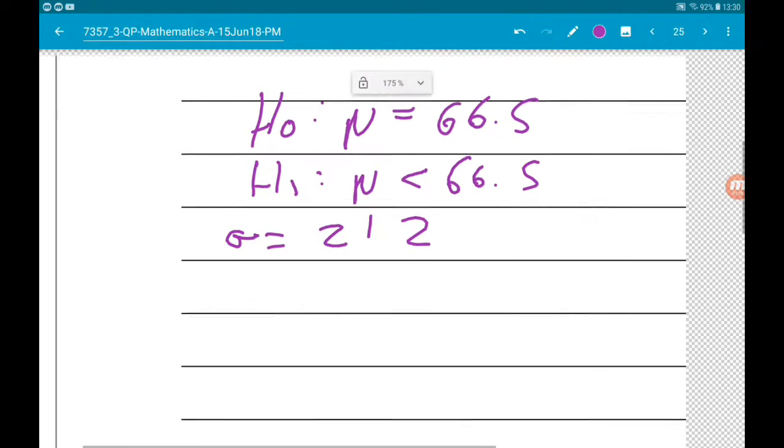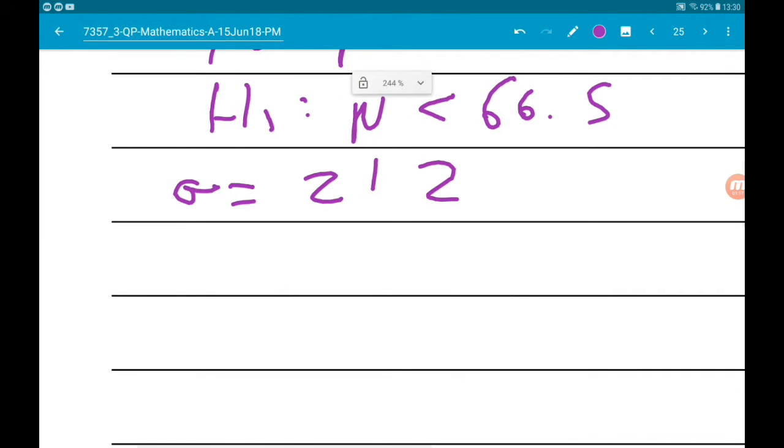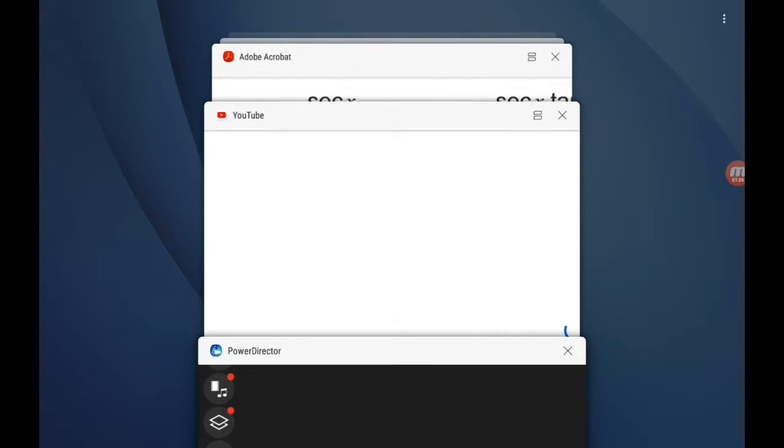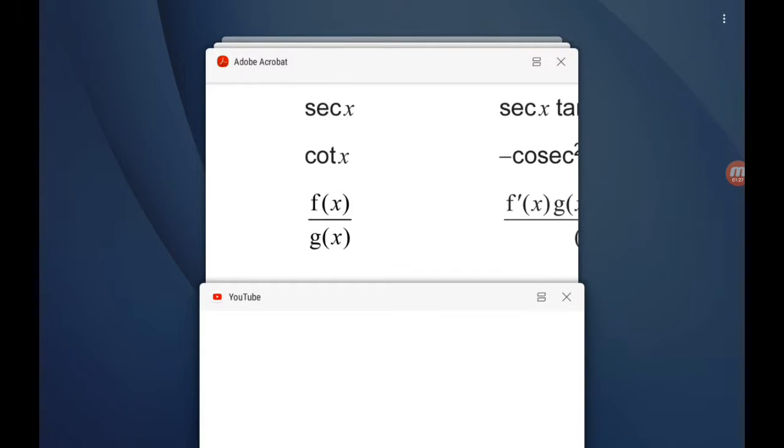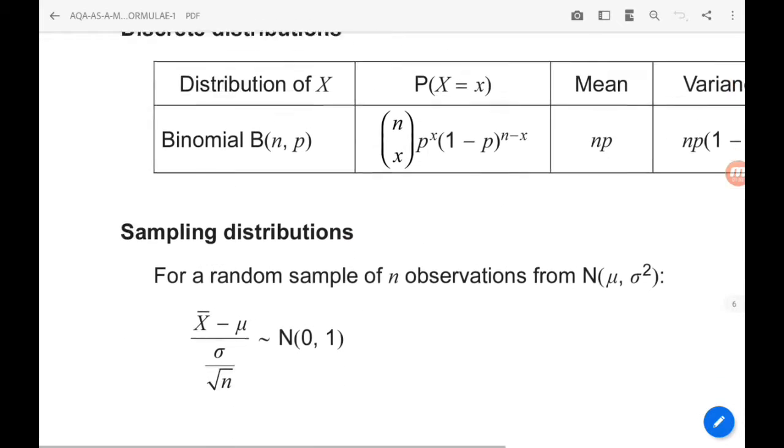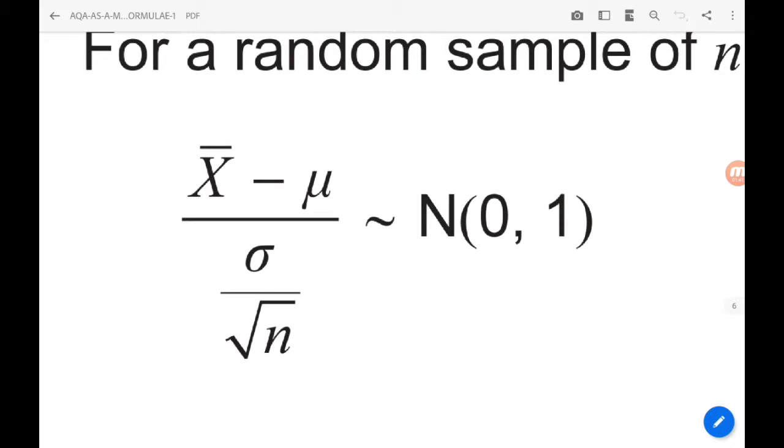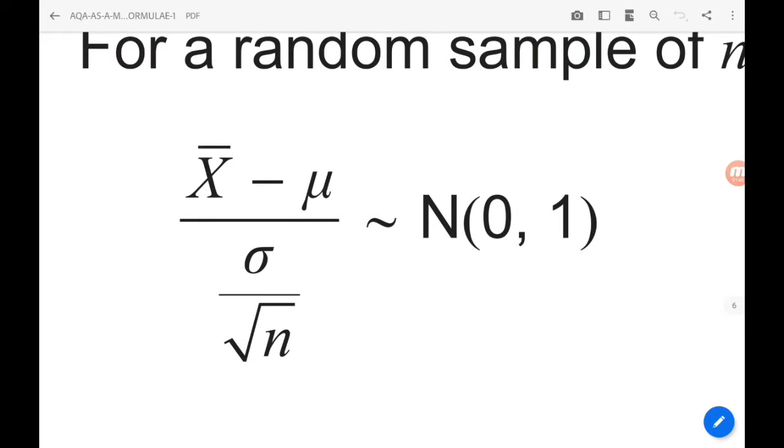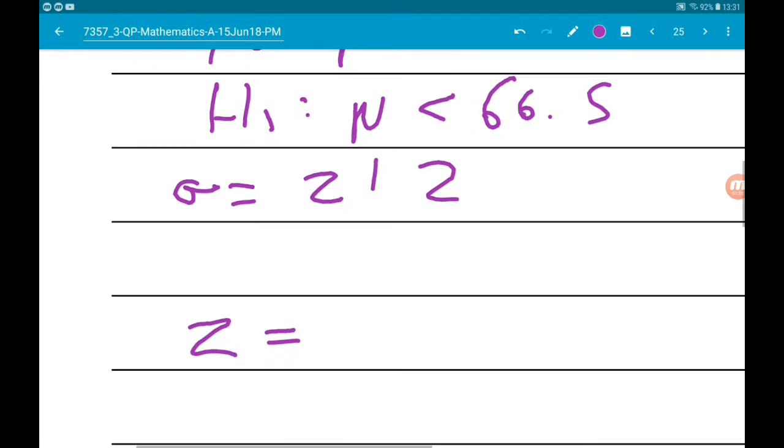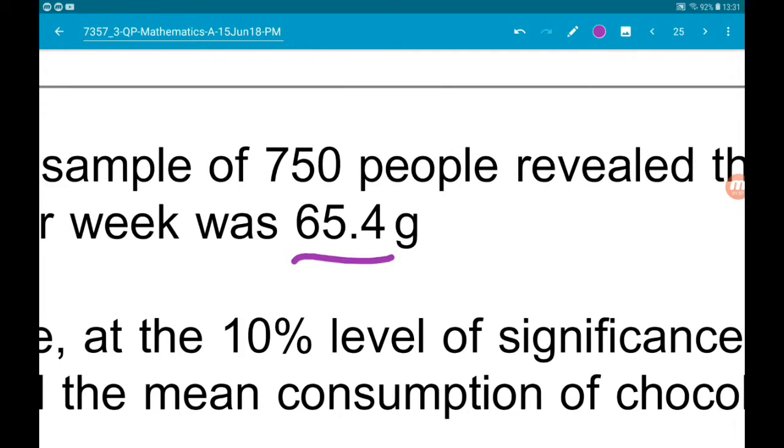So what we need to do is find our z-value for this data. So z is x-bar minus mu... here it is, this is the formula that we want. We're in a sampling distribution and this is z: x-bar minus mu over sigma over root n. So we got x-bar is going to be 65.4.